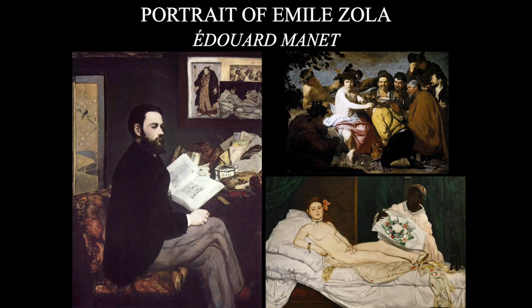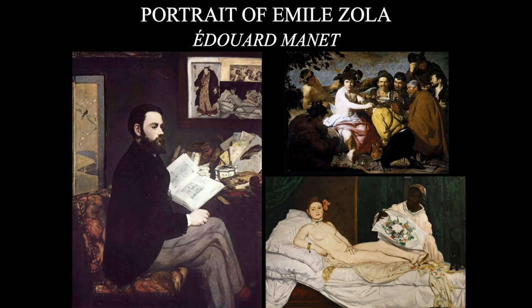Manet was also friends with modernist writers such as Émile Zola and Baudelaire. In the portrait of Zola, the background shows heavy Japanese influences entering Europe as trade with Japan opened up — we see a Japanese screen, a woodcut print, and prints of famous paintings including Olympia by Manet and Los Borrachos by the Spanish artist Velázquez. Being called a borracho is considered a serious insult in Spain, unlike in Italy, France, or Holland.